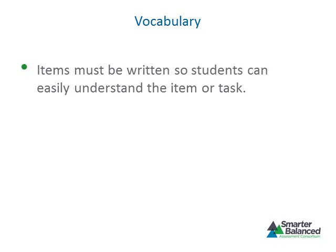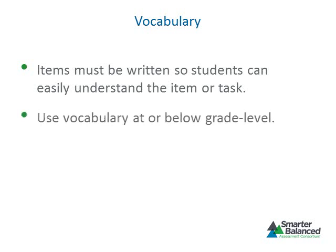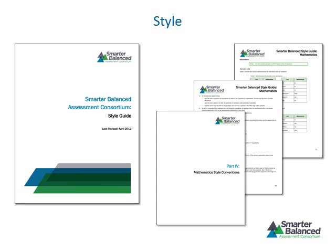Items must be written so students can understand them without difficulty. Vocabulary used must be at or below the grade level being assessed. Appropriate grade level mathematics vocabulary is defined in the Common Core State Standards for Mathematics and the Smarter Balanced Mathematics item specifications. The Smarter Balanced Style Guide provides both global style conventions that apply to all content areas and style conventions specific to mathematics. It is important to review the Smarter Balanced Style Guide before writing items and tasks.